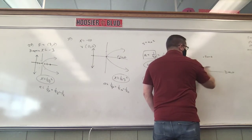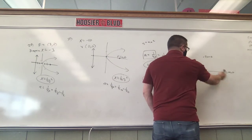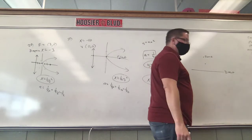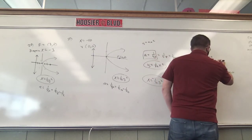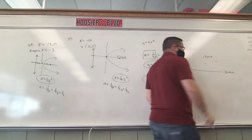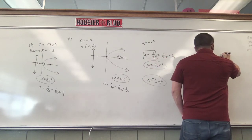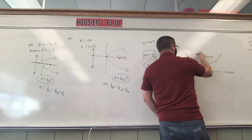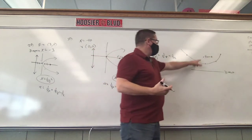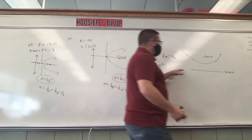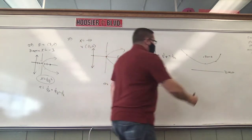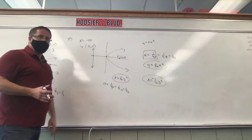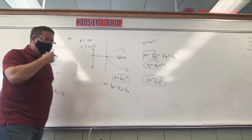For example, if this is a road — the directrix — and this is a point — the focus — it's the set of all points where the distance to the focus equals the distance to the directrix. The focus is a point inside the cup, the directrix is always outside the cup, and the vertex is always the low point or the high point of the graph.